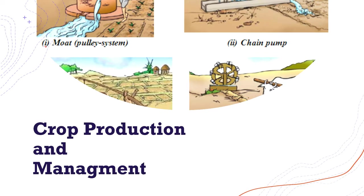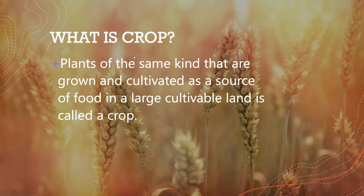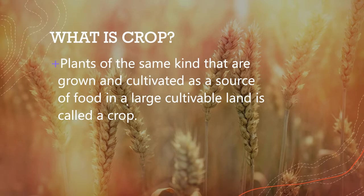Good morning everyone, my name is Falgun and today we are going to study a new chapter. The chapter's name is Crop Production and Management. Before starting, let us understand what is the meaning of crop. Crops are plants of the same kind that are grown and cultivated as a source of food in a large cultivable land on a large scale. That is called a crop.